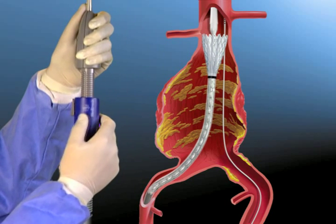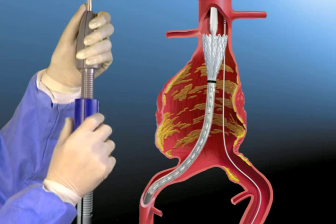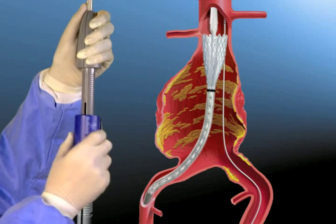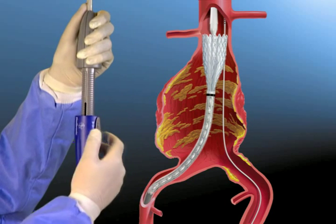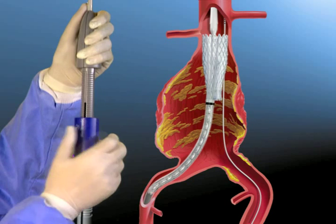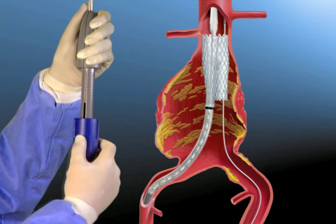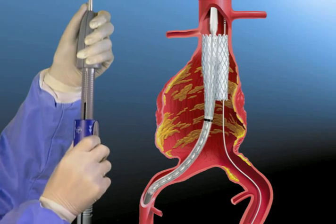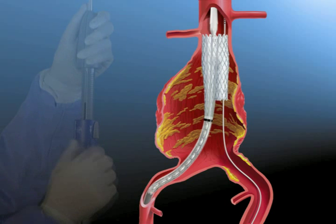At any point, the trigger on the slider can be used for more rapid deployment of the stent graft. It is recommended, however, that slow rotational movement of the slider be used until the contralateral short pant leg is deployed.